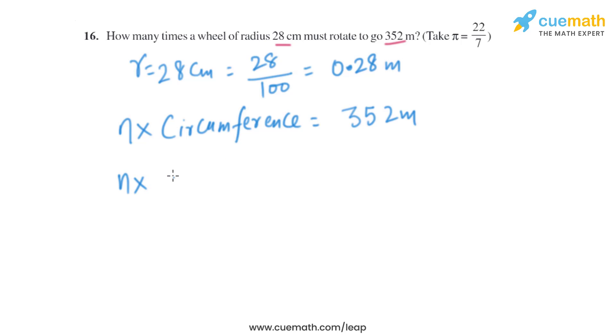The circumference is 2 × 22/7 × 0.28. So n times this equals 352. On solving, we get n × 1.76 = 352.